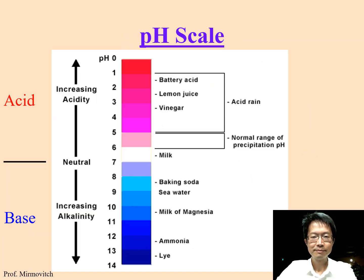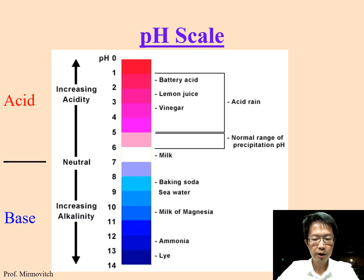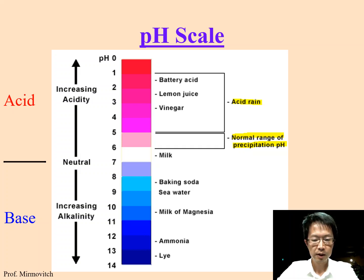We talked about acid rain last time, but I didn't talk about the normal precipitation — meaning urine. Normal urine is slightly acidic, around pH 5 to 6. This is the normal range of urine.